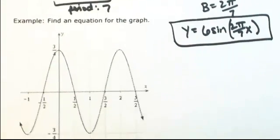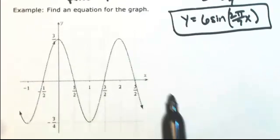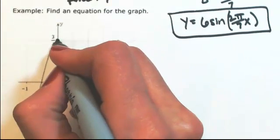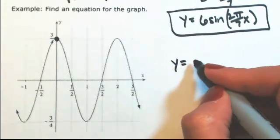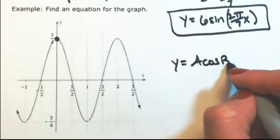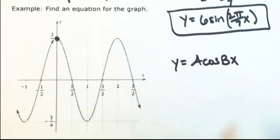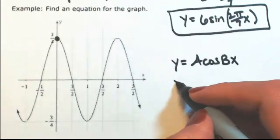Let's look at another one. Notice this time that at 0 we start with a max. This tells me this is going to be a cosine curve. So y is equal to a cosine bx. The a is determined by the amplitude, which is 3 fourths.